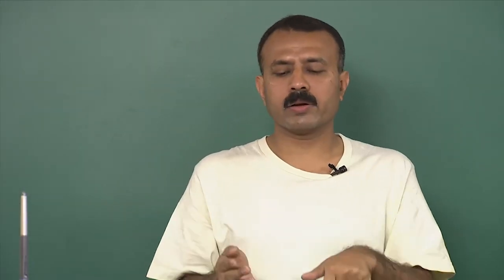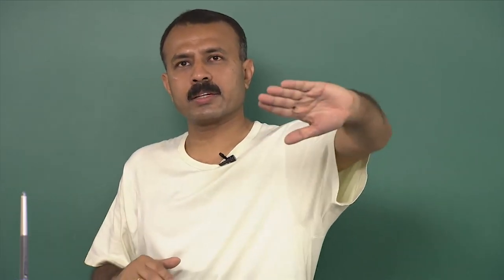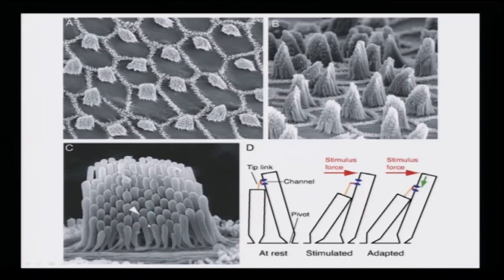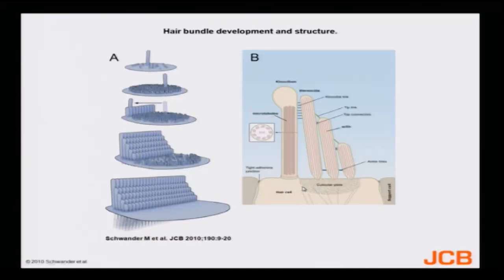If the kinocilium moves in one direction it will pull all of the stereocilia in that direction. They are arranged in height like a staircase. Looking at this cartoon drawn from those pictures, it is as if the cells are sitting in a photo session with a cameraman. The larger one is called the kinocilium; all the others are stereocilia connected by tip links. There are also other sets of links, all eventually connected to the cell.